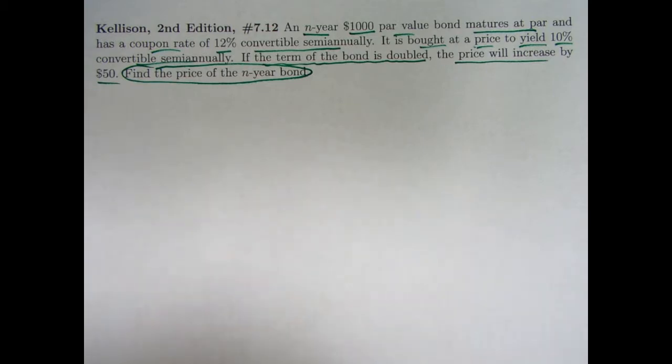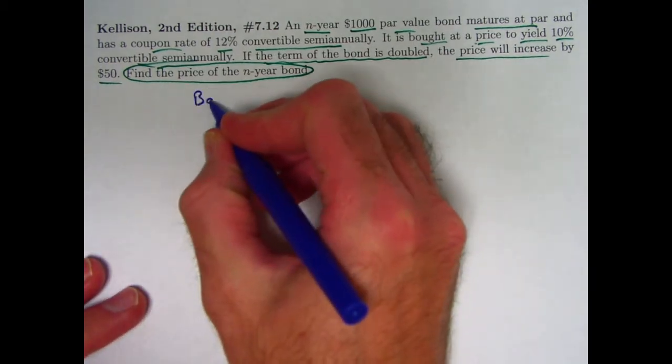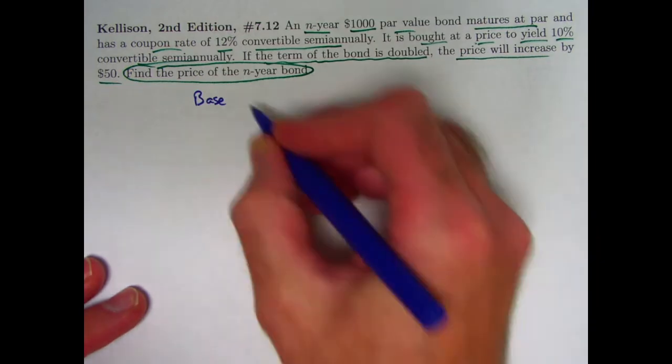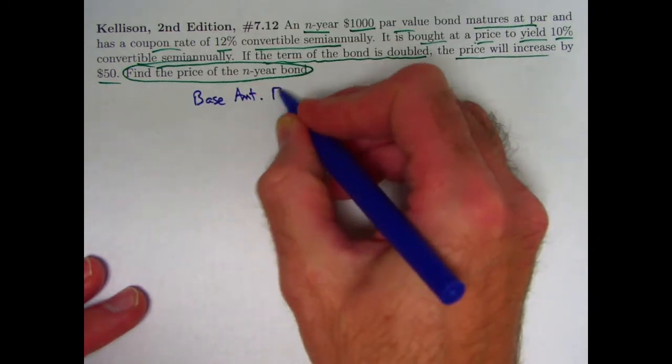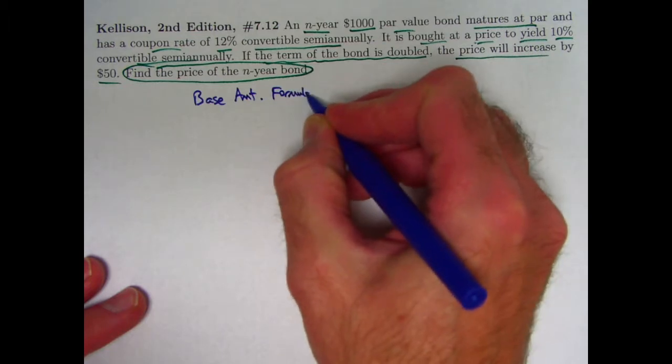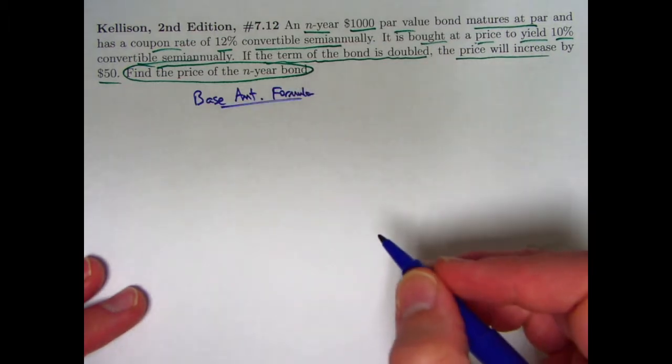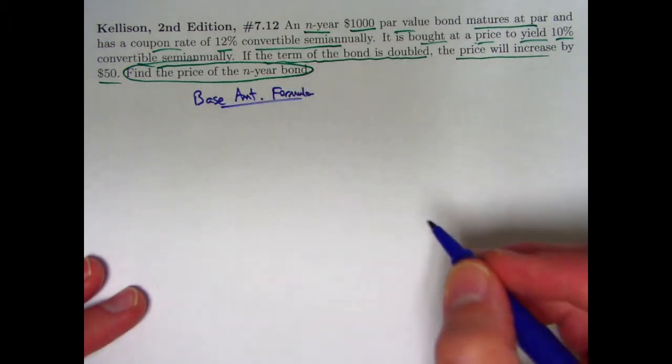It might be nice to use a formula that does not involve a-n, the present value of an annuity immediate. There are two such formulas: the base amount formula and Makeham's formula. The base amount formula has v to the n in it. Since n is the number of years here, let's write out how this would look in this context.